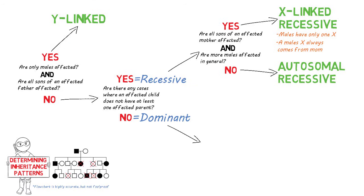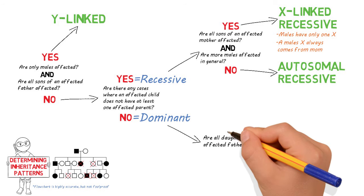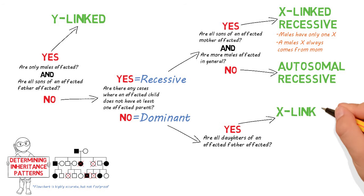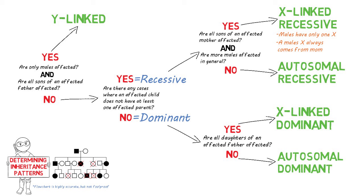Moving down the dominant line, we ask: are all daughters of an affected father affected? If yes, then it is X-linked dominant. Males only have one X chromosome, which goes to their daughters, so all daughters will carry that mutation. If the answer is no, then it is autosomal dominant by default. If there is a case where an affected father has an unaffected daughter, or an affected daughter has an unaffected father, you know it can't be X-linked, because the father only has one X and that will always go to the daughter.